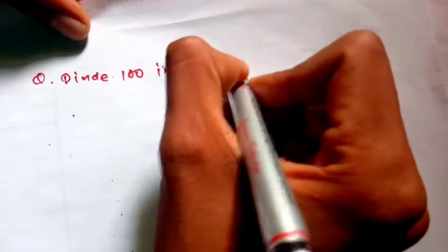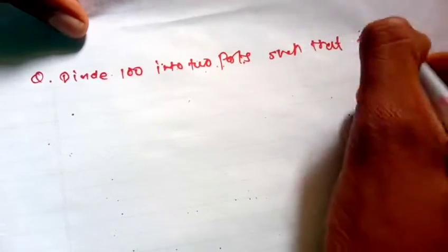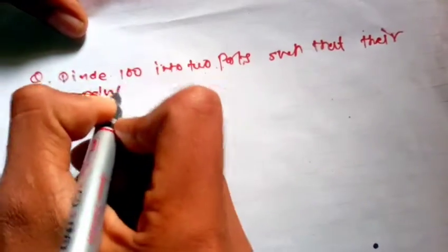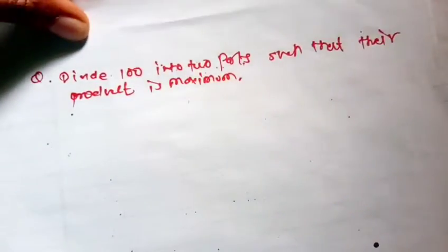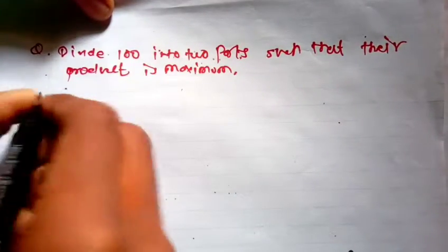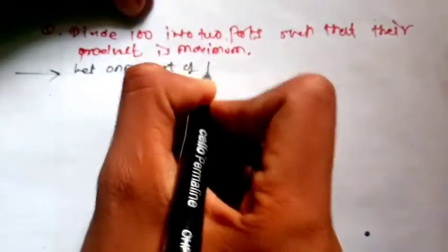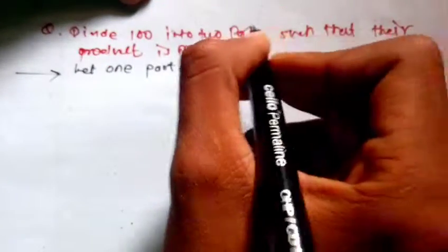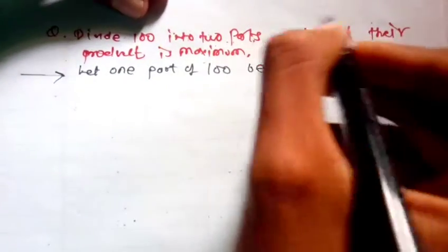Divide 100 into two parts such that their product is maximum. Let one part of 100 be X and another part be Y.